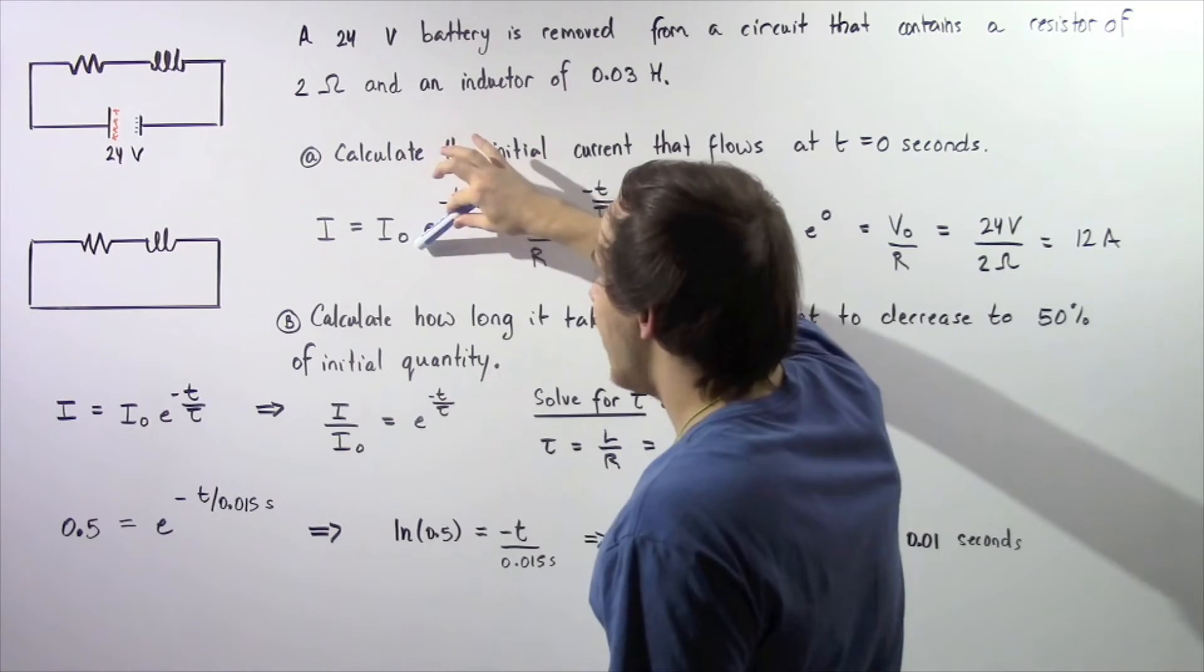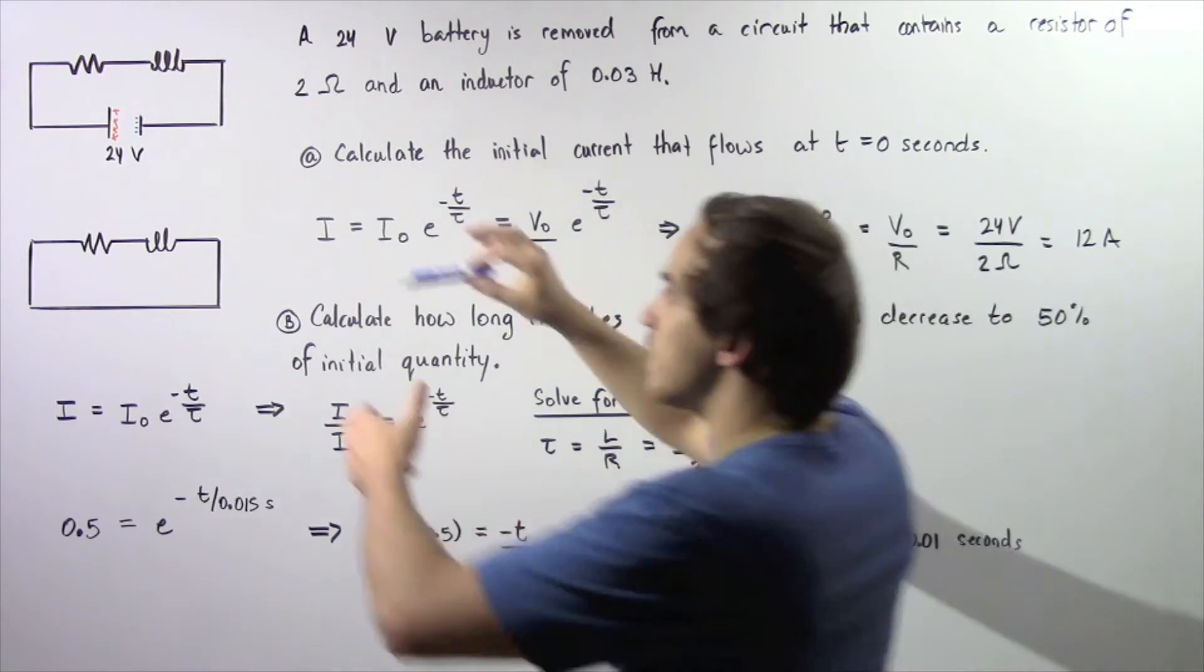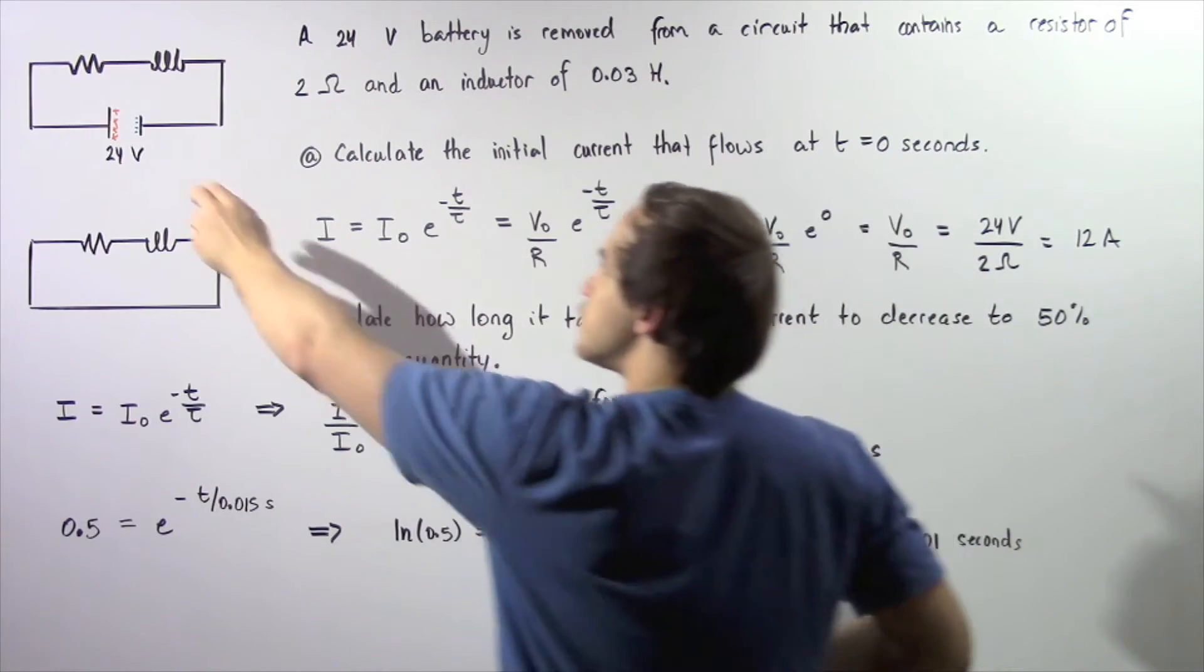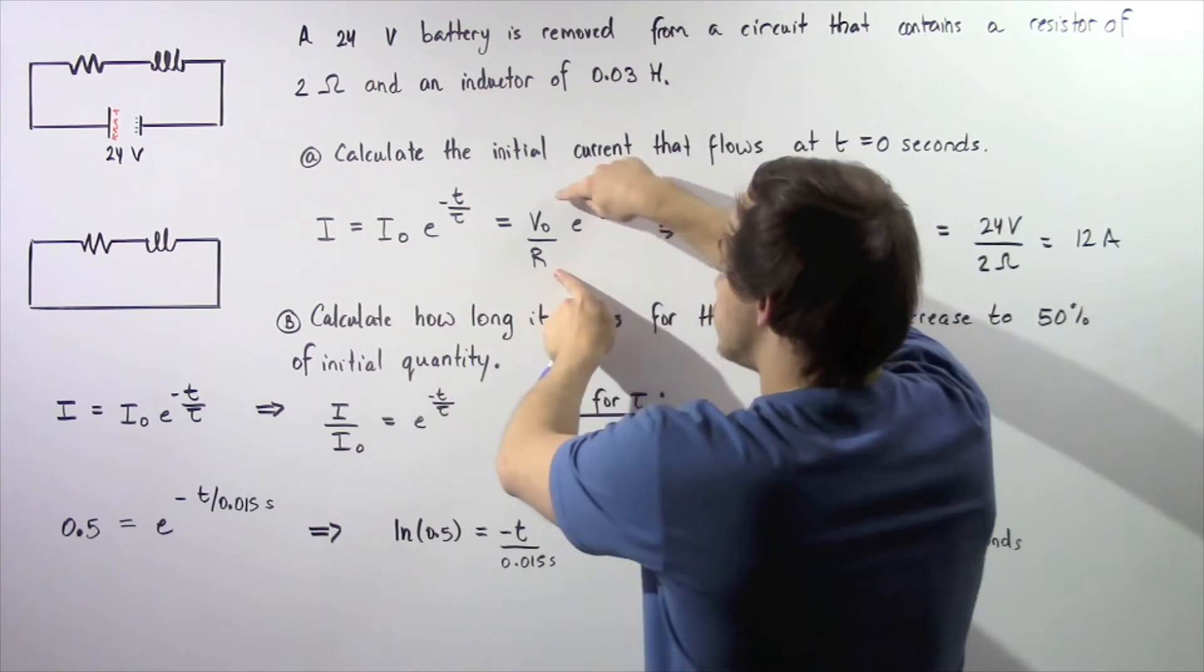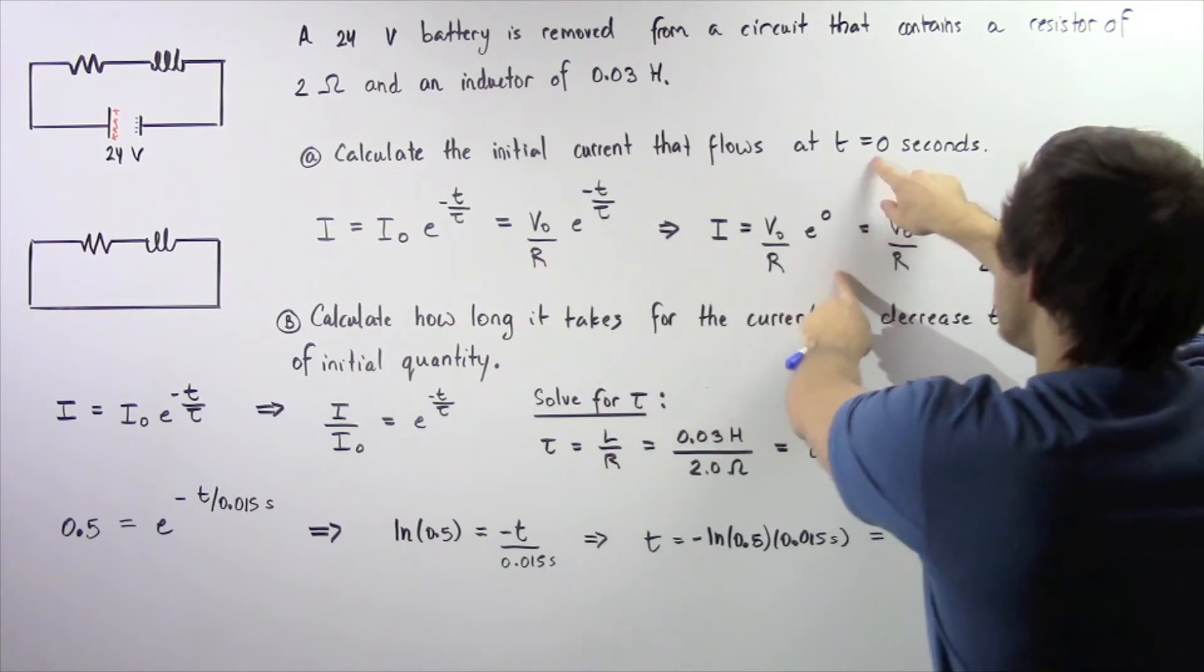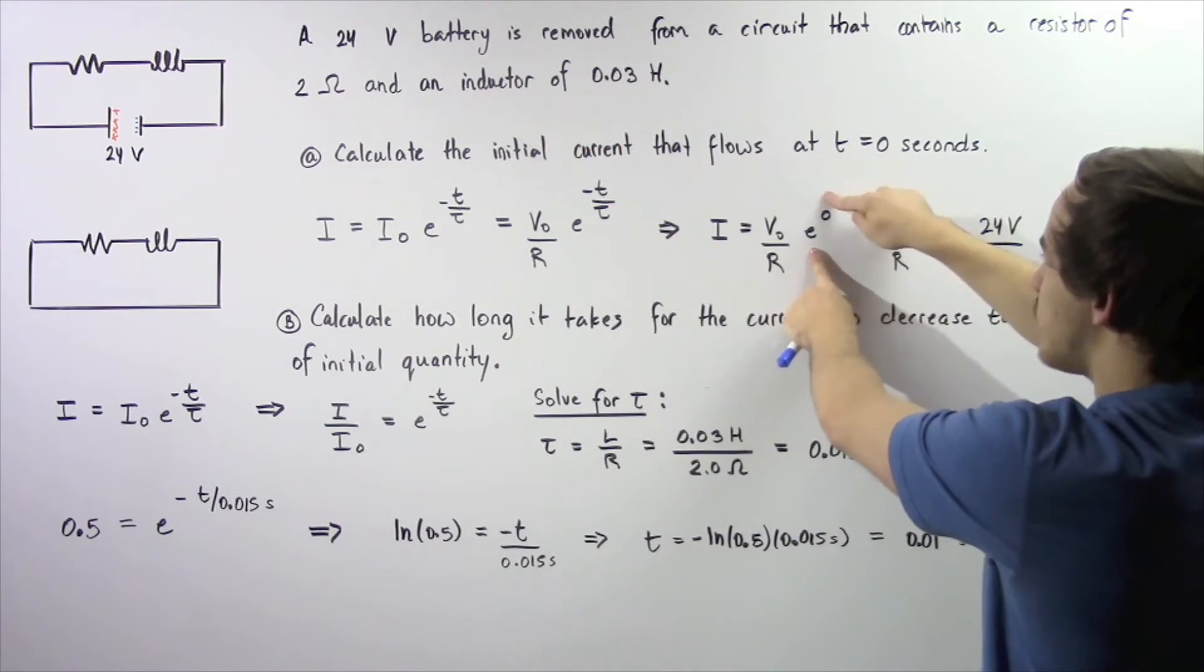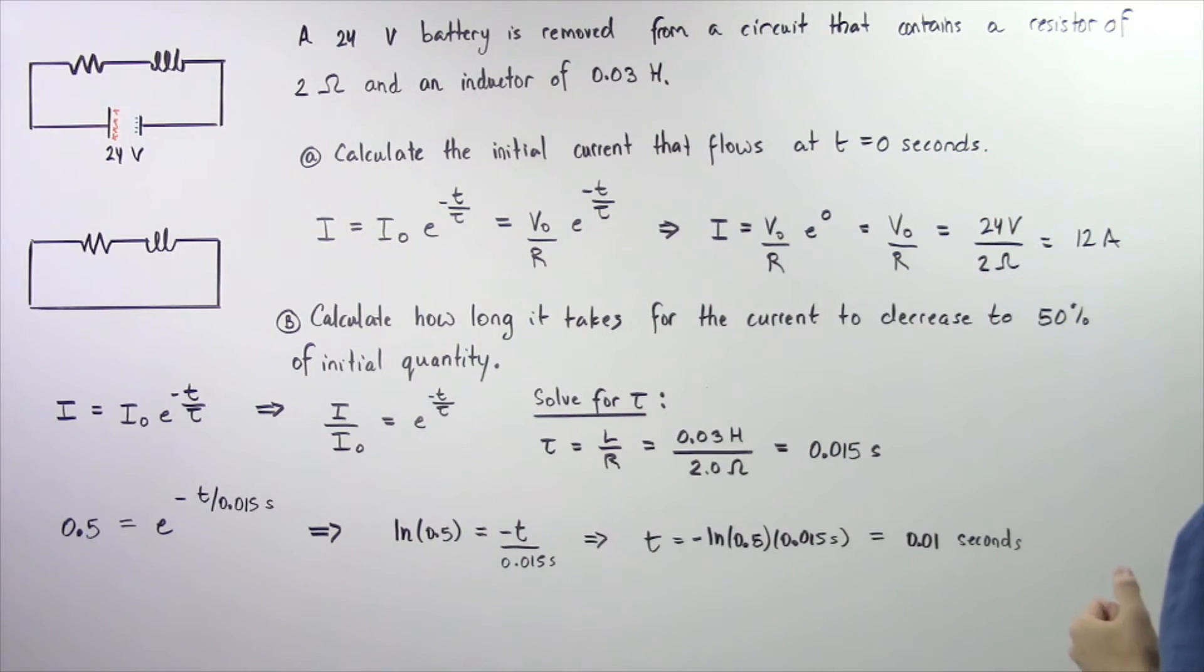Recall that I0 is simply equal to the ratio of the voltage of the battery given by V0 divided by R, and R is our resistance of our resistor. Now, our time is assumed to be 0 seconds. So we plug in 0, this goes to 0. Since E to the 0 is 1, we see that I is equal to V0 divided by R.